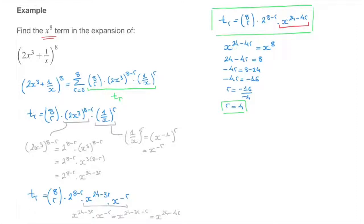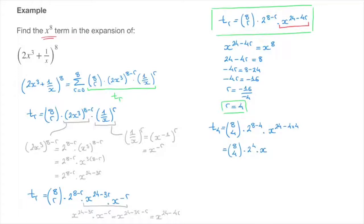The result r equals 4 tells us that the x to the power of 8 term corresponds to the general term when we replace r by 4. So t_4 equals the binomial coefficient 8 4 times 2 to the power of 8 minus 4, times x to the power of 24 minus 4 times 4 — that's 24 minus 16, which is 8. This confirms we have the term we were looking for, giving us the binomial coefficient 8 4 times 2 to the power of 4, which is 16, times x to the power of 8.